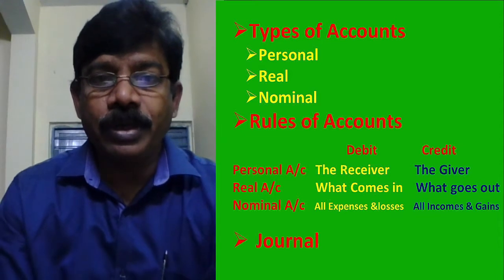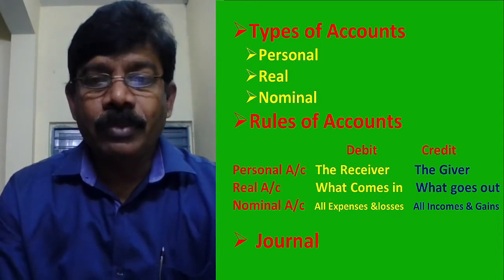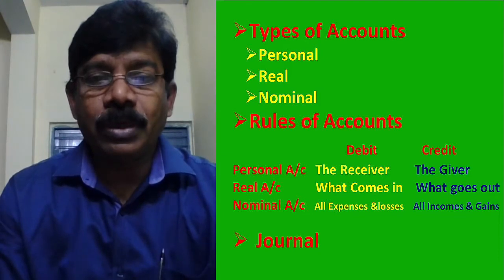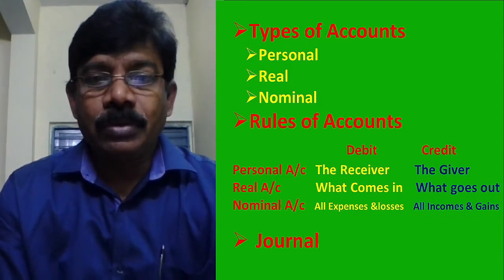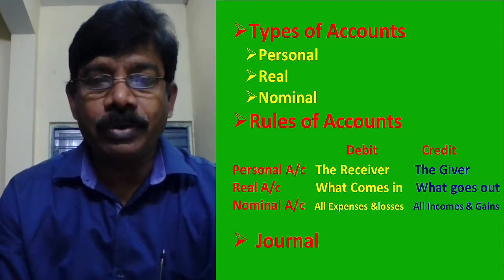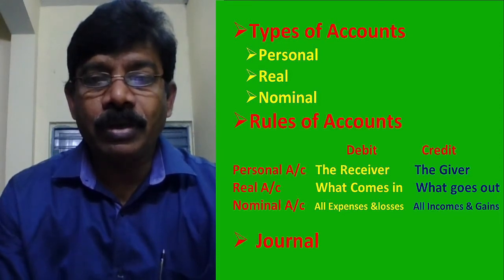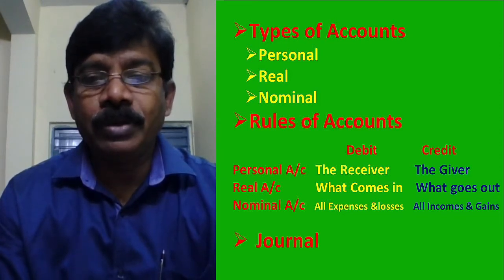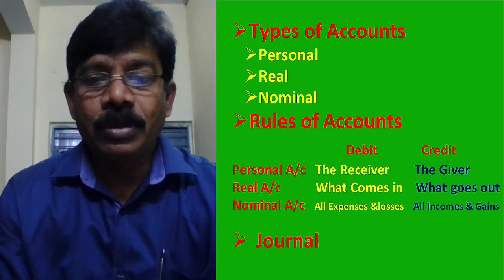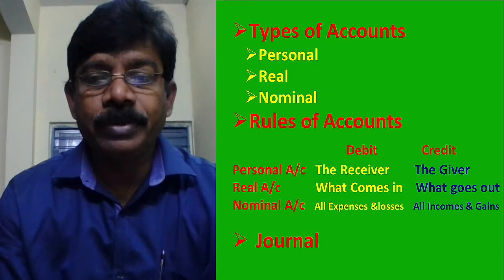How many types of accounts are there? Three types. What are they? Personal, real, and nominal. The rules are different from one account to the other. Personal account rules: debit the receiver, credit the giver. Real account rules: what comes in debit, what goes out credit. Nominal account rules: all expenses and losses debit, all incomes and gains credit.